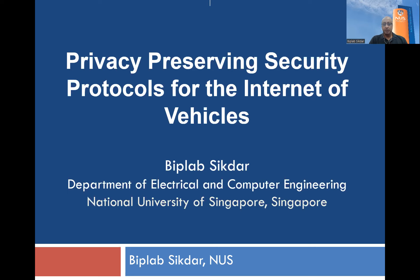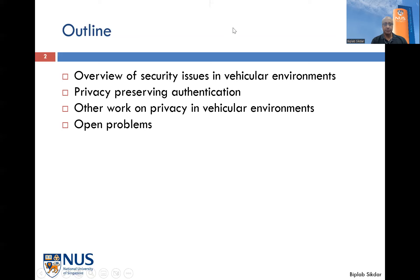This is an overview of the talk today. I'll give you a very high-level overview of security issues in vehicular environments. Then I'll give you one example of a privacy-preserving protocol, specifically authentication for the Internet of Vehicles. And then I'll give an overview of some other possible open problems and other work in privacy for vehicular environments, where there is still potential for further work.